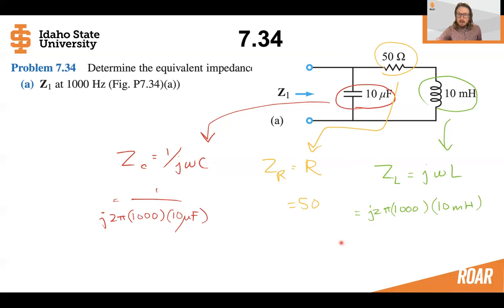We are given values for all of these circuit elements, and so we can calculate them. One thing that you must note here is that the frequency we were given in the problem in part A is in hertz, but the phasor domain is in radians.